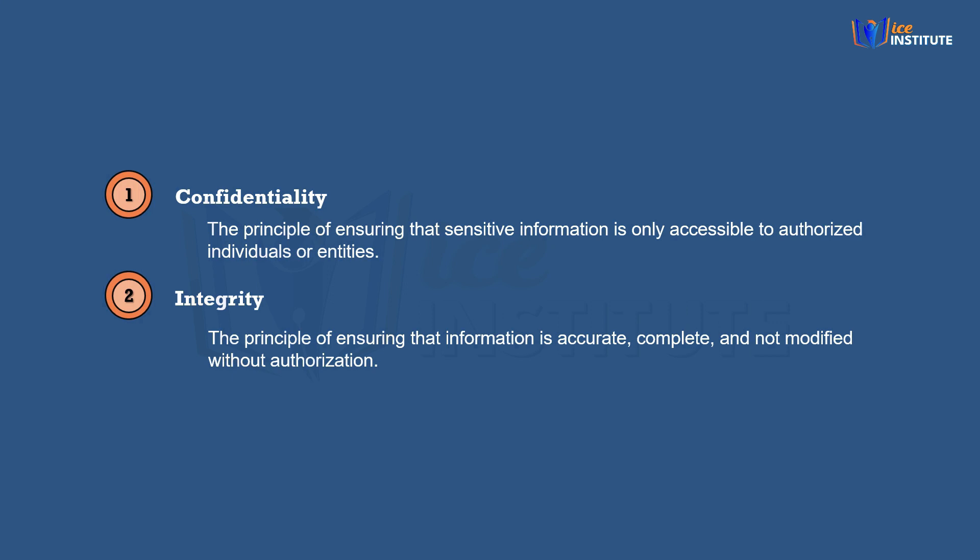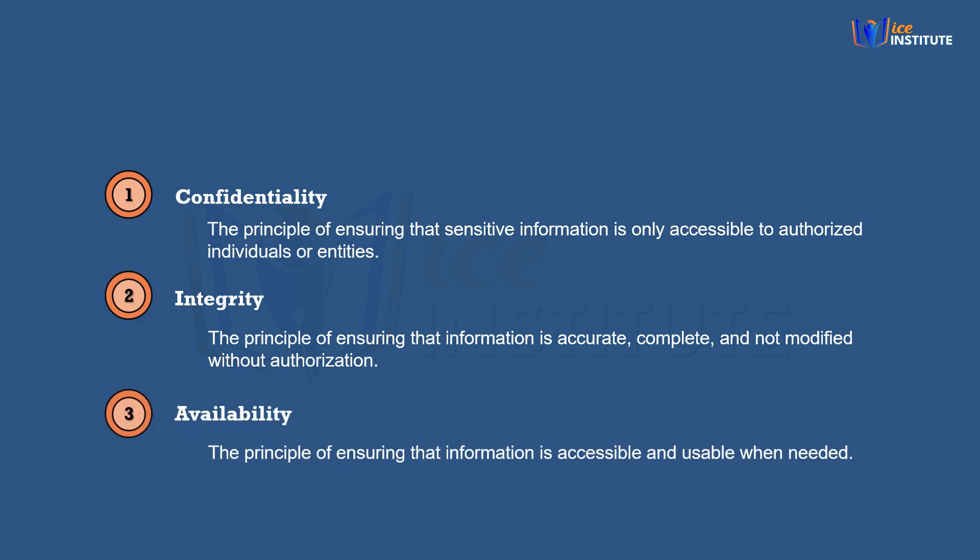Attacks on the integrity of information are designed to cause embarrassment or legitimate damage to the target — आपका reputation customer की नजर में खराब हो जाएगा. So integrity is also a very important factor as far as security is concerned. Now the third point is availability — it's the principle of ensuring that information is accessible and usable when needed.